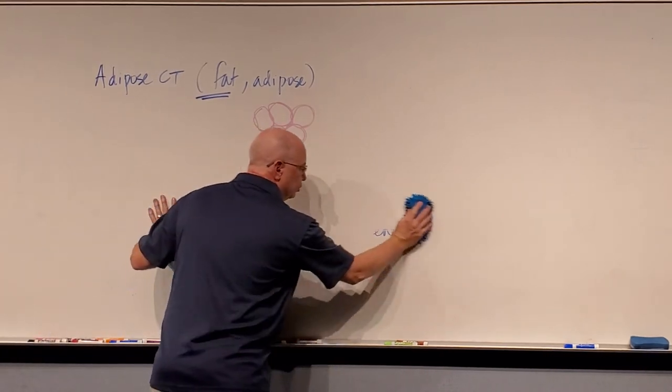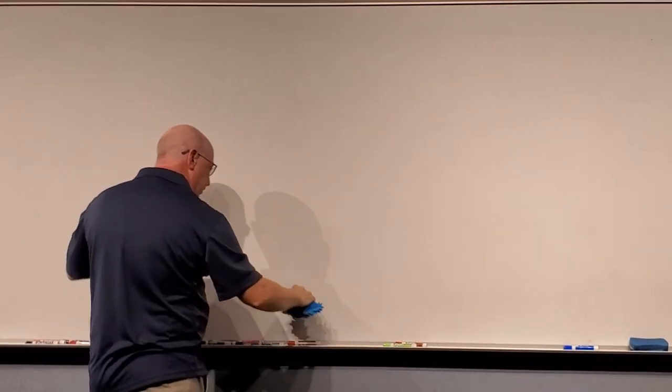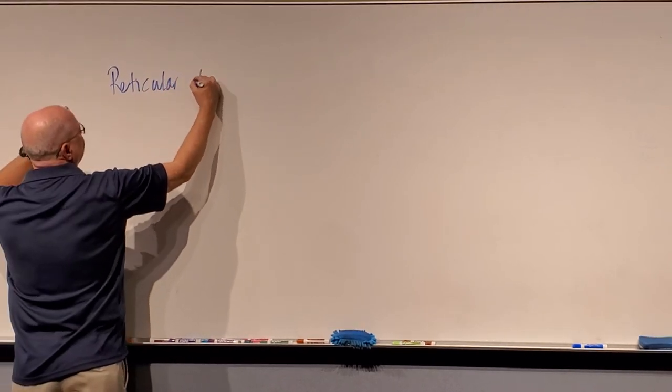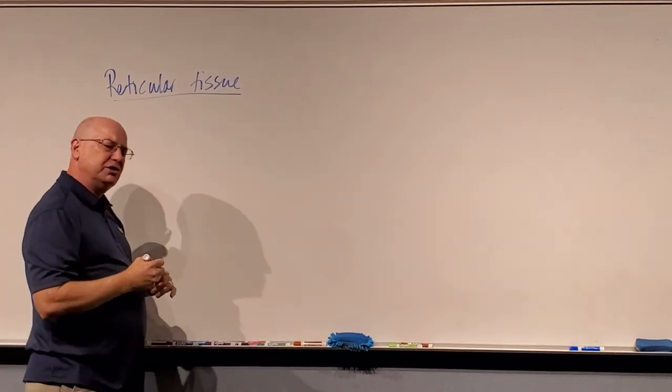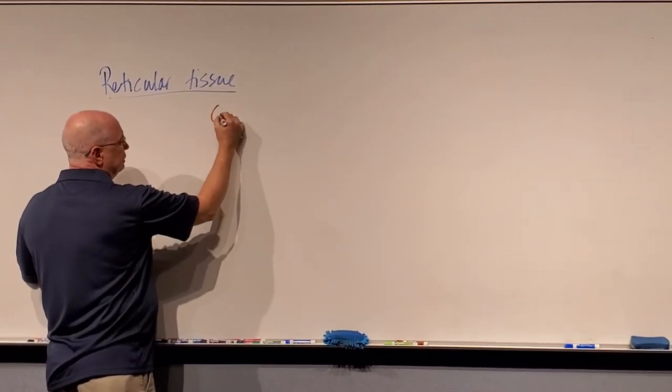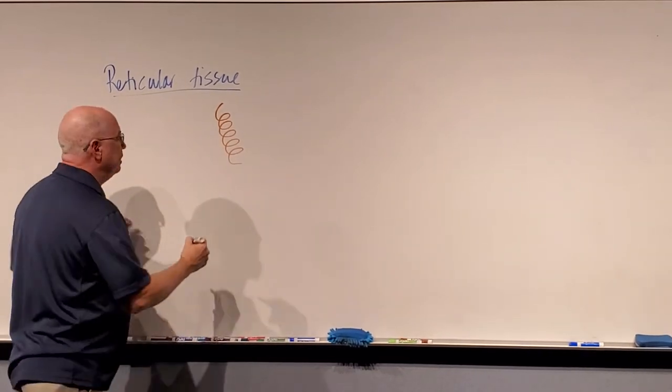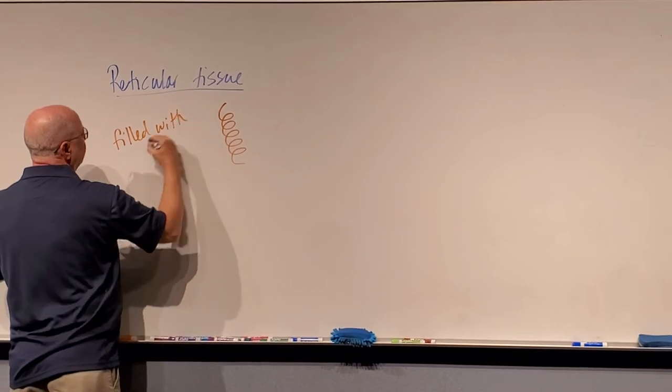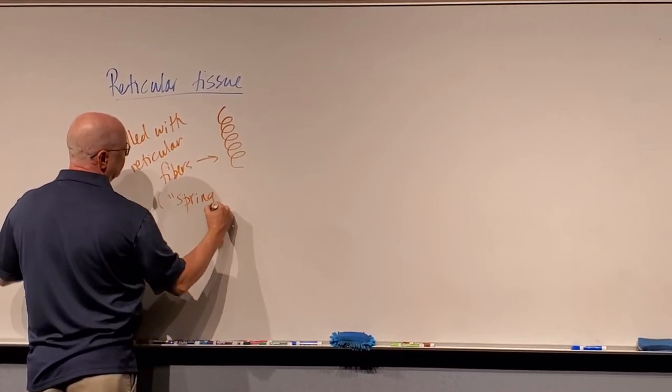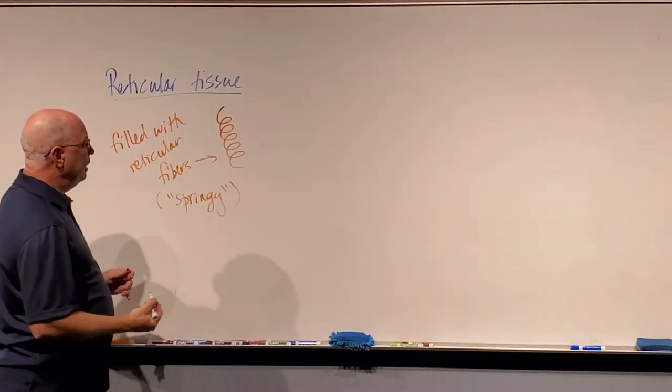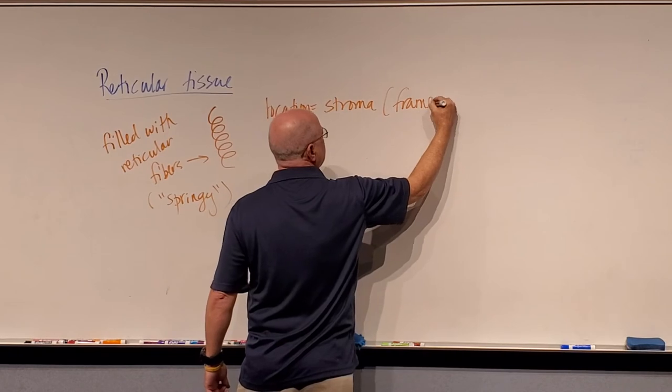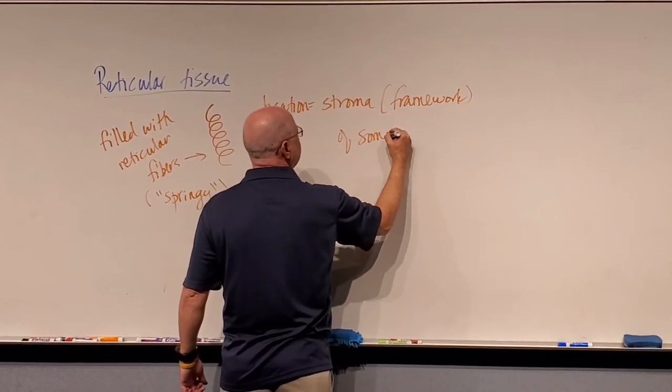Now there's a section in the notes that says read about yellow fat and brown fat. You can read about that if you like. It's not on the test, but go ahead and read about it. Those are the three connective tissue propers, but there's one more we need to talk about. We did not look at this one in lab, at least in my lab, but for connective tissue proper, there's a fourth one called reticular tissue. Reticular tissue sometimes looks a little bit like loose connective tissue, but it has these fibers, these little protein fibers that actually sometimes look like little coils. They almost look like a little spring. So this tissue is filled with what we call reticular fibers.